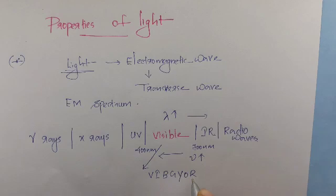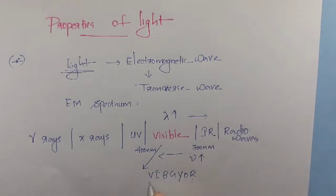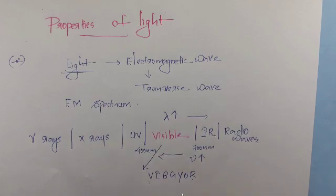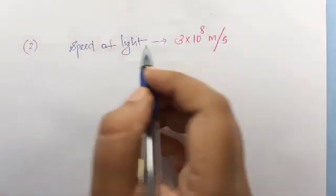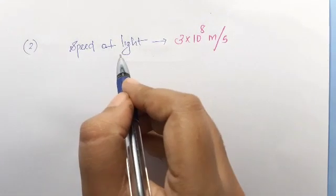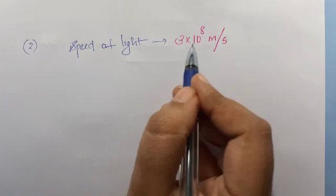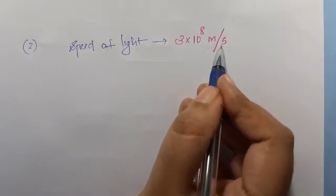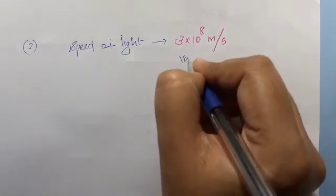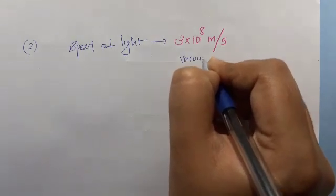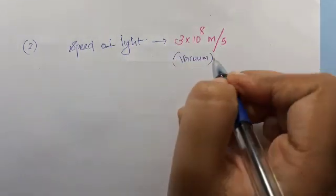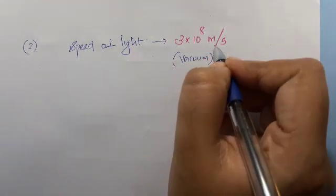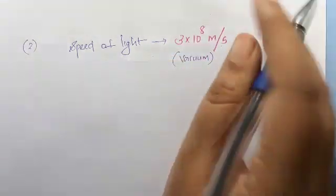The wavelength is inversely related to frequency — as frequency increases, wavelength decreases. The second property of light is its speed. The speed of light is 3 × 10⁸ meters per second.